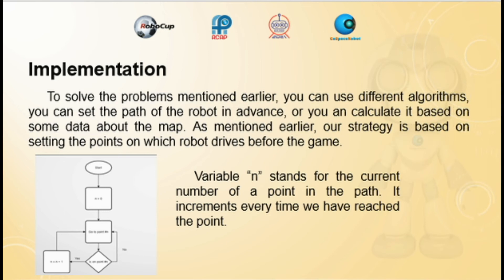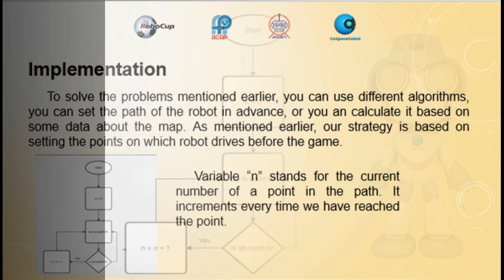To solve the problems mentioned earlier, you can use different algorithms. You can set the path of the robot in advance, or you can calculate it based on some data about the map. Our strategy is based on setting the points on which the robot drives before the game. The variable AND stands for the current number of a point in the path, and it increments every time we have reached a point.